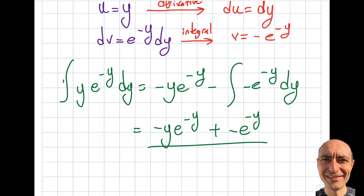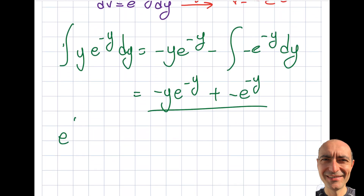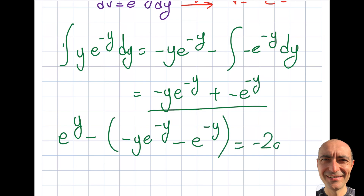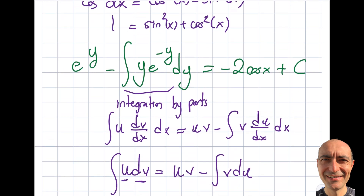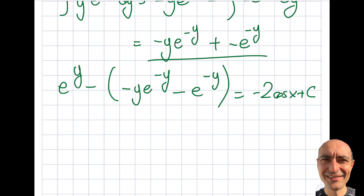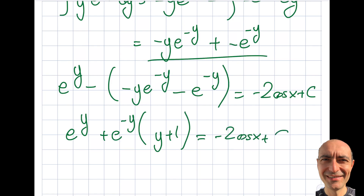Putting the whole left side together: e^y − (−y·e^(−y) − e^(−y)) = −2 cos(x) + c. Simplifying the left side: e^y + e^(−y)(y + 1) = −2 cos(x) + c. This is as far as I can reasonably simplify, and I'm comfortable calling this the general solution.